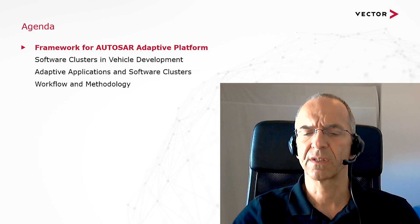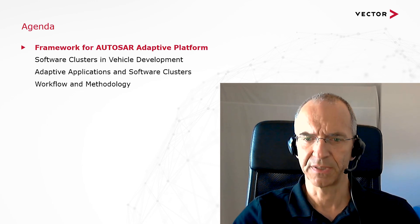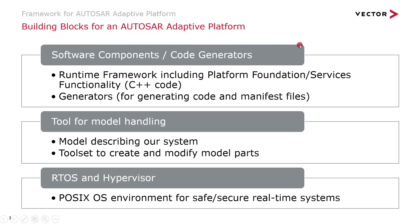First we would like to revisit the scope of a potential development framework to create adaptive applications. In any case we need an appropriate runtime framework including all the necessary adaptive platform foundation and services functionality. This usually ships as source code and is compiled and linked for the intended target platform. We also need generators to convert modeling artifacts from the AUTOSAR meta model into C++. This would be, for instance, a proxy and skeleton part for our service interfaces. The generators would also extract model information and convert it into configuration files or even pieces of programming code, classes or constant expressions in our C++ code base.